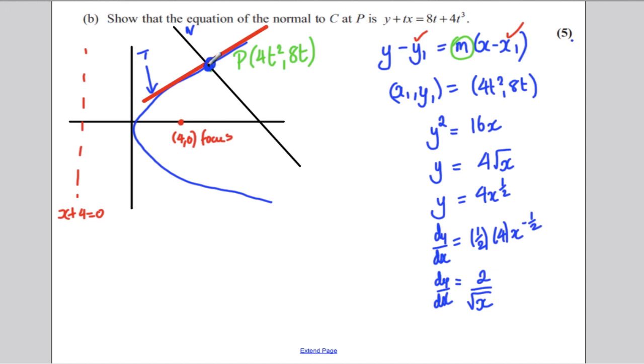Now, we want dy by dx at a certain point. We want dy by dx, and you should continue down the page here. But we want dy by dx when x is equal to 4t squared. Right? At this point. So, we substitute that in and we get 2 over the square root of 4t squared. And the square root of 4t squared is 2t. So, 2 over 2t is 1 over t. So, and you should continue down the page. Therefore, the gradient of the tangent is 1 over t.